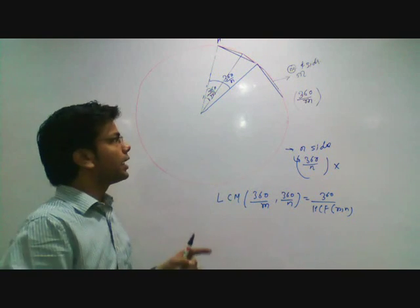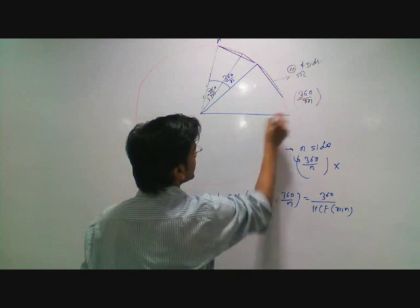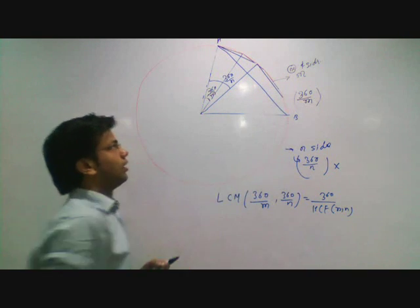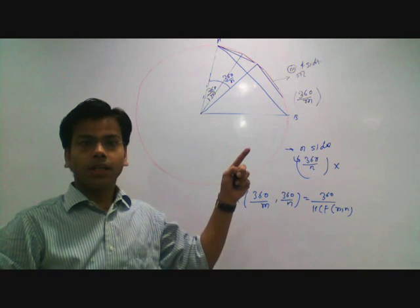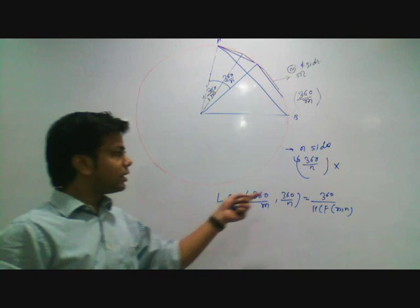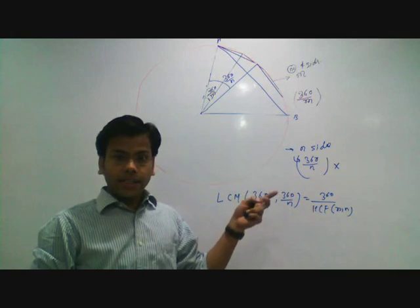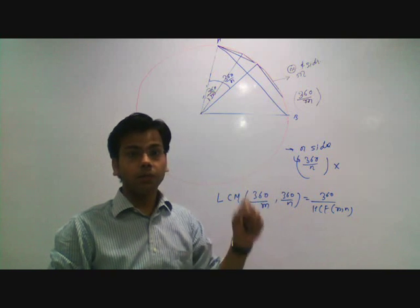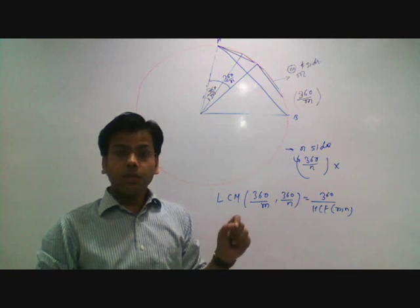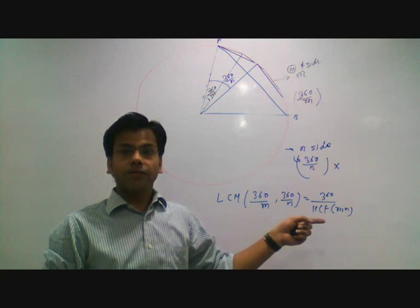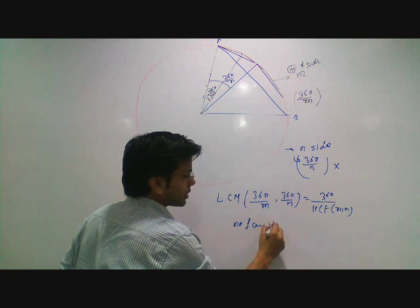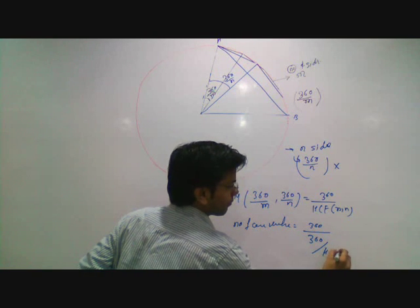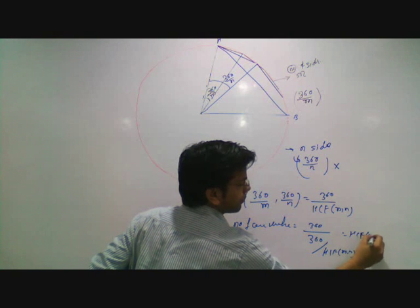At some point on the circle we get a common vertex where the black and blue polygons coincide. Point B is the second common vertex. We are making a new regular polygon with common vertices, with central angle 360 upon HCF of m and n. The number of common vertices with this central angle is 360 divided by the central angle, which is nothing but the HCF of m and n.